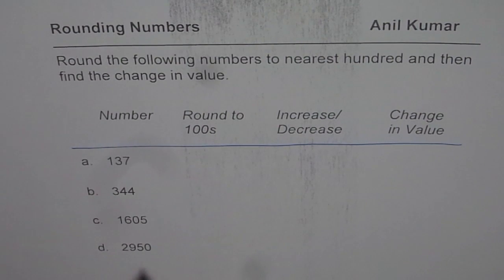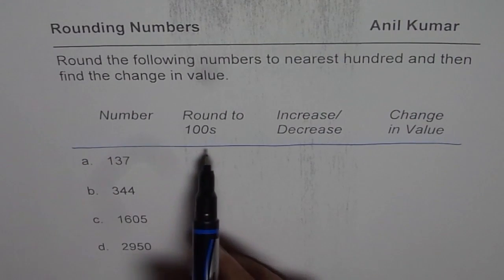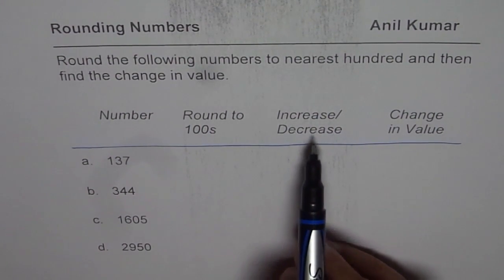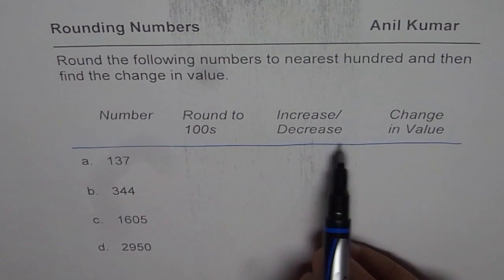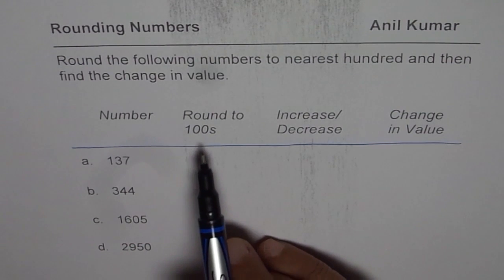We have four numbers to work with. We will first round them to nearest hundred. So let's start rounding them to hundreds first and then we will find whether they increase or decrease and what is the change in value. So step number one for us is to round these numbers to nearest hundred.